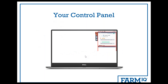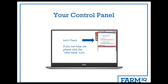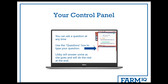You'll see that you have a control panel on your screen. If you'd like to reduce or enlarge it, just click the orange arrow at the top of the panel. In order to reduce background noise we've muted all of the attendees this evening. However, we'd love you to participate — you can either raise your hand by clicking the little hand icon and we'll unmute you, or you can type your questions and comments into the questions box on your control panel.